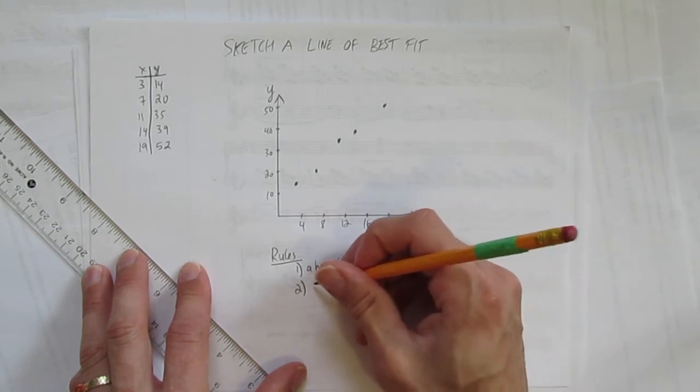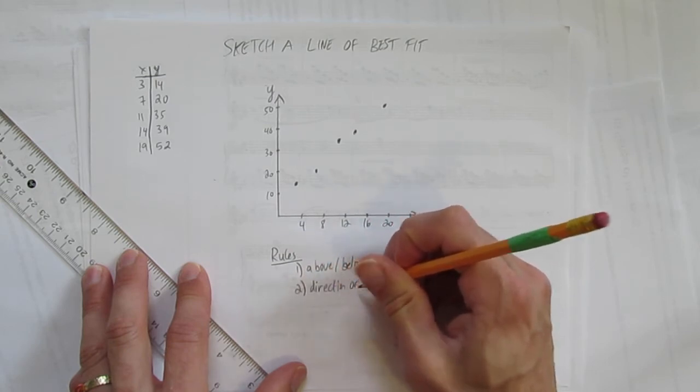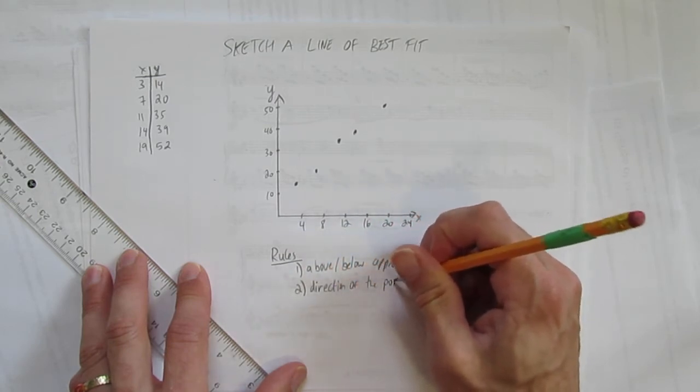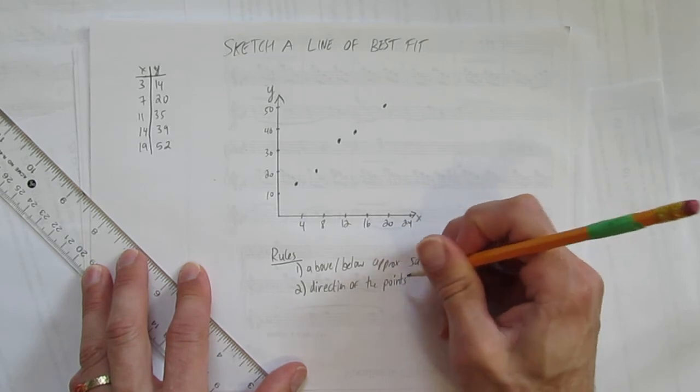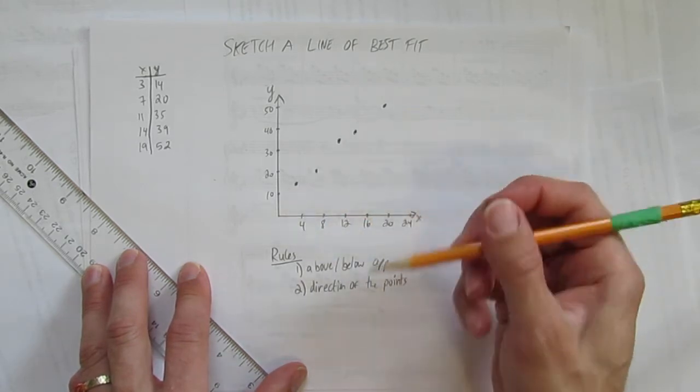Rule number two, your line of best fit should go in the direction of the points. So clearly when you look at the dots I've drawn, this graph, it clearly goes up to the right, your line better go up to the right.